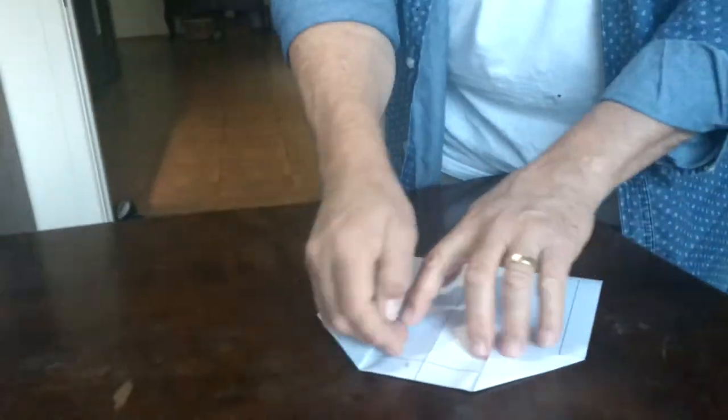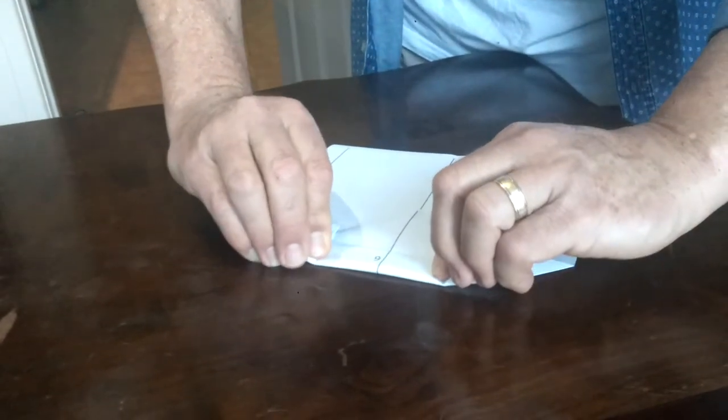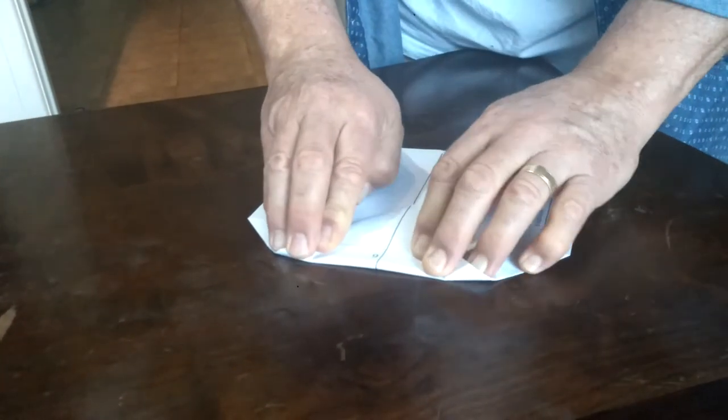There. That was four. Number five is right across the front here. So we just fold number five over. And you can see number six has just appeared.